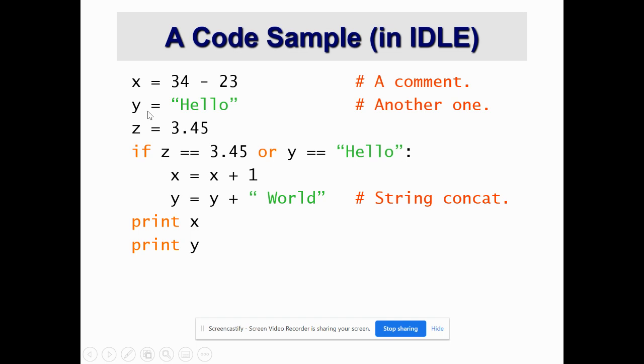Second, we have y is equal to hello which is put in double quotes. It is a string. We are assigning this value hello to the variable y.